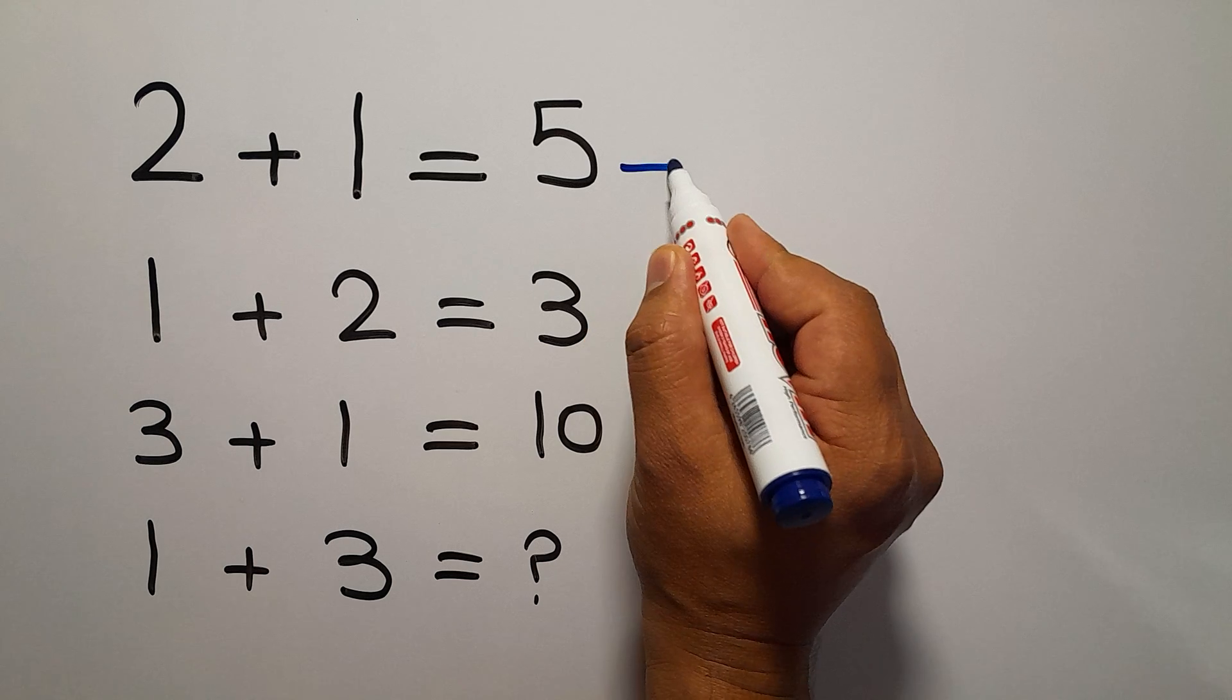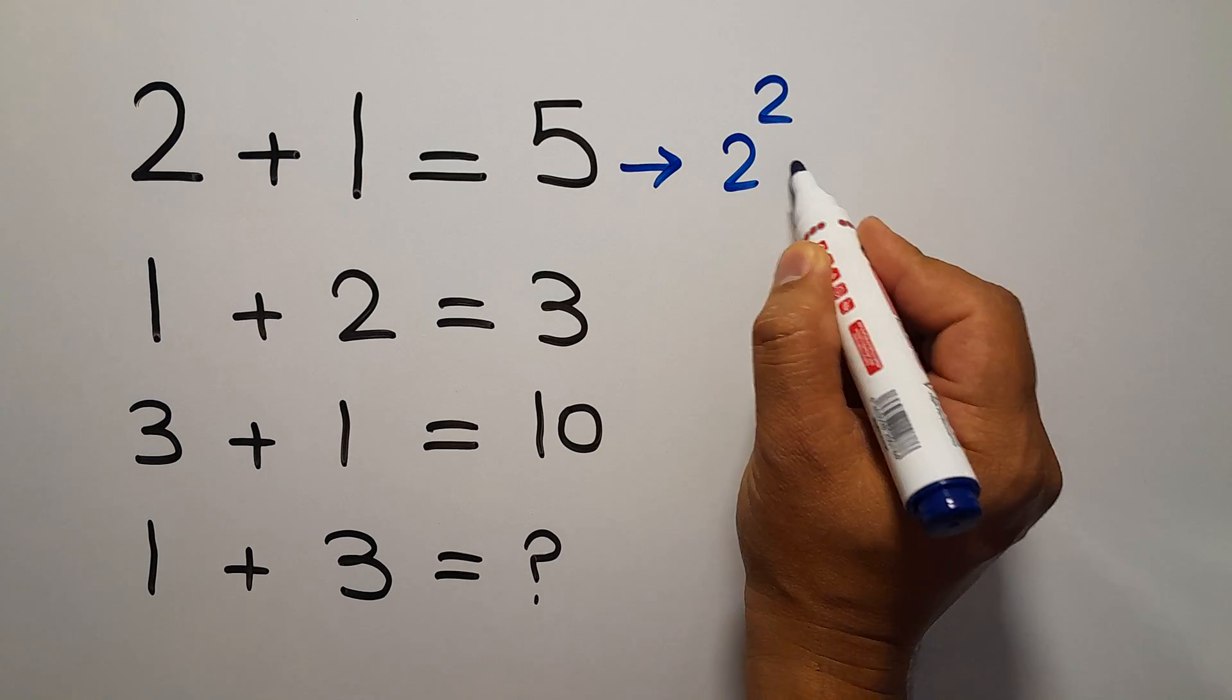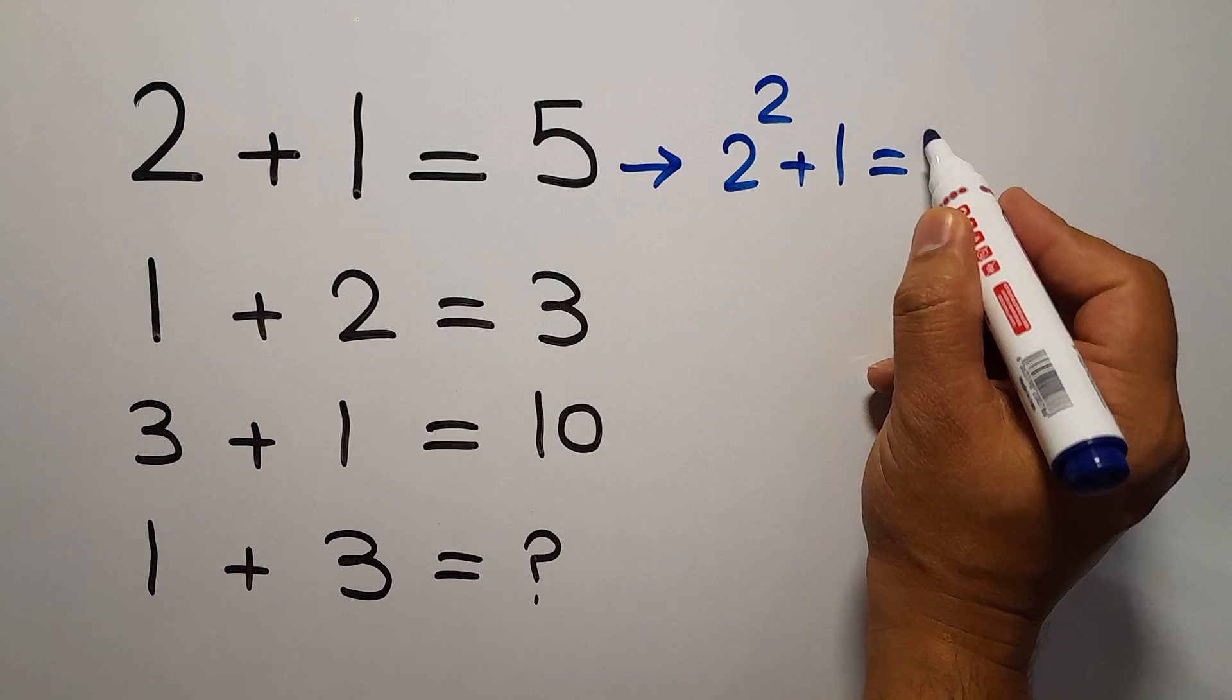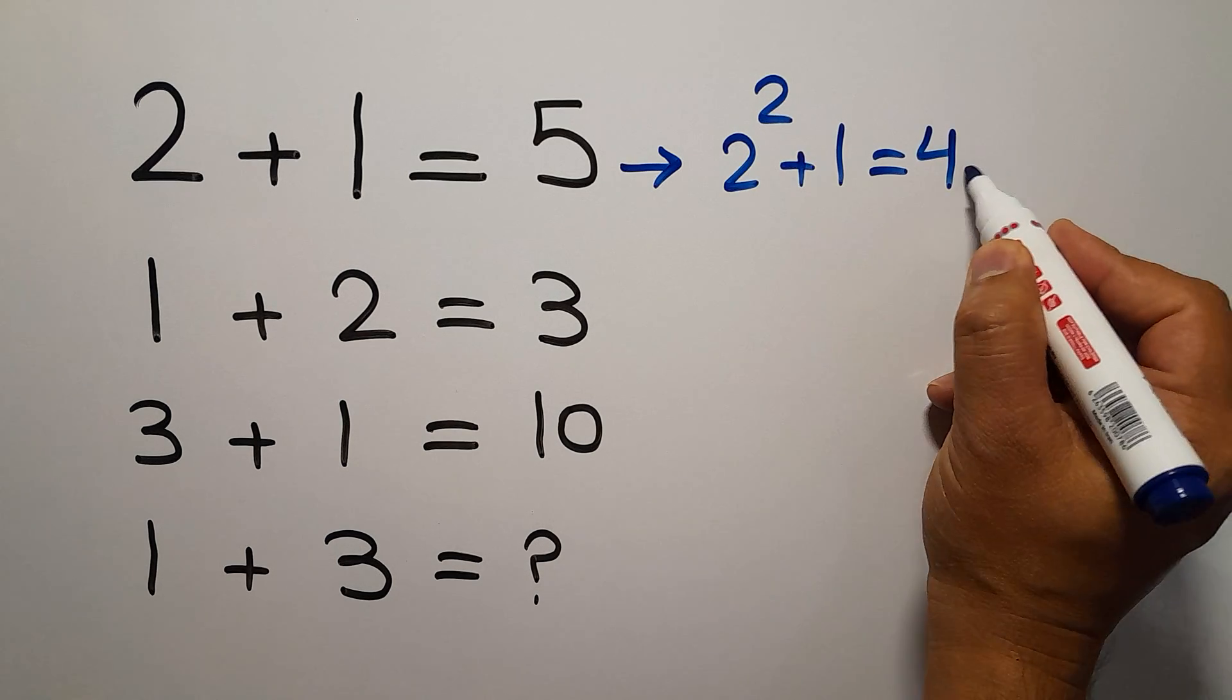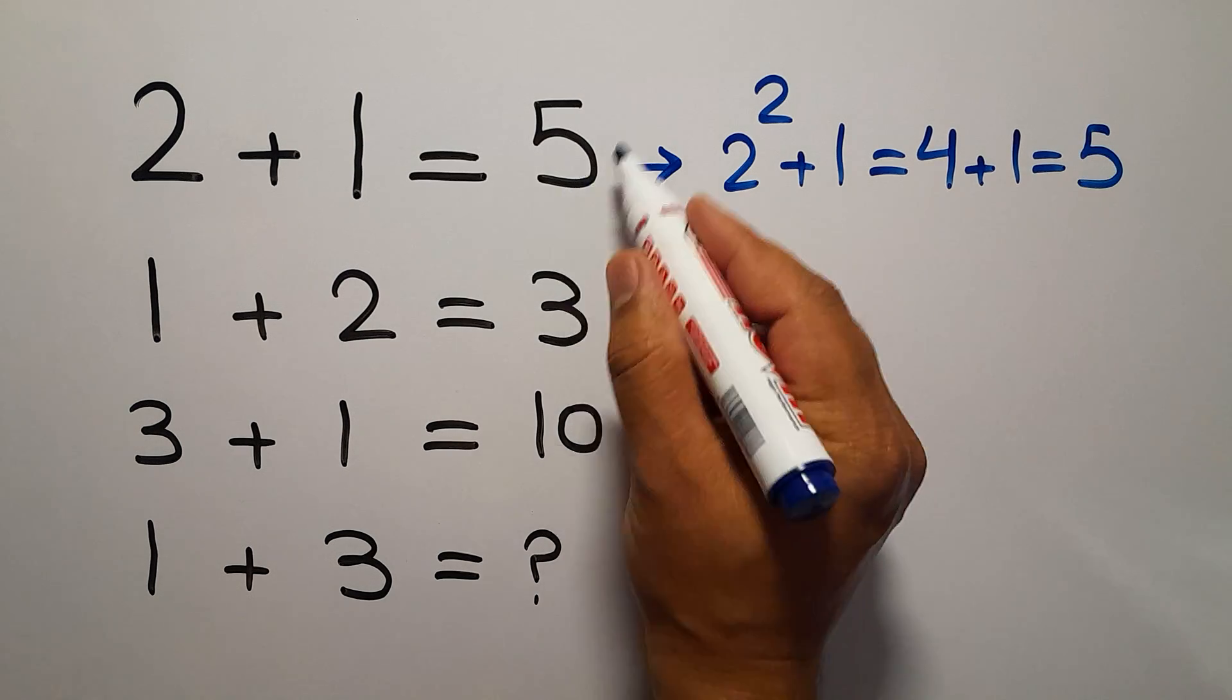2 square plus 1 equals... 2 square is 4, and plus 1 gives us 5, the right hand side number.